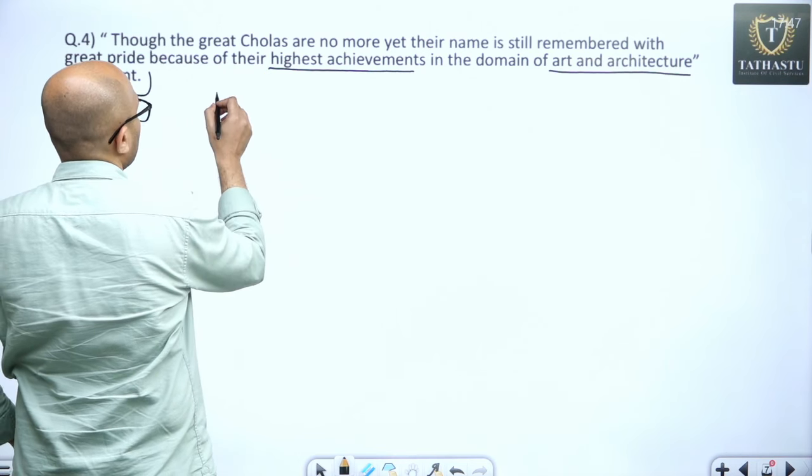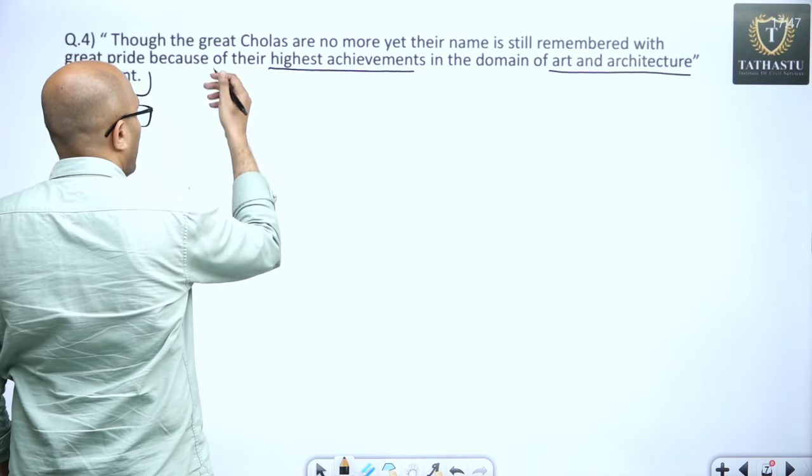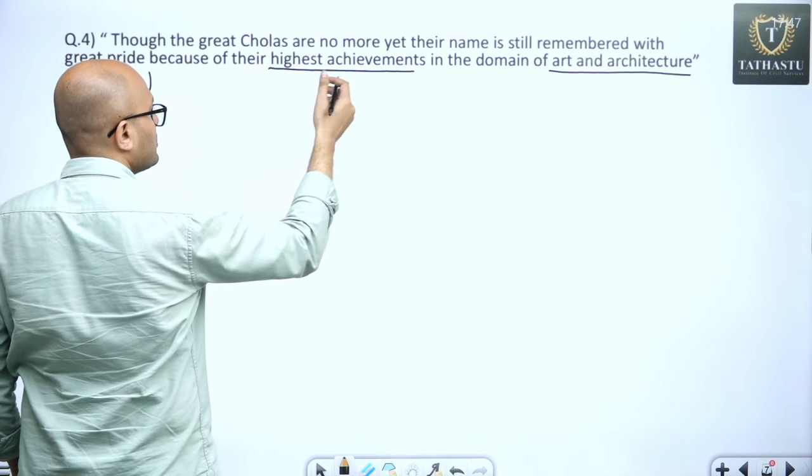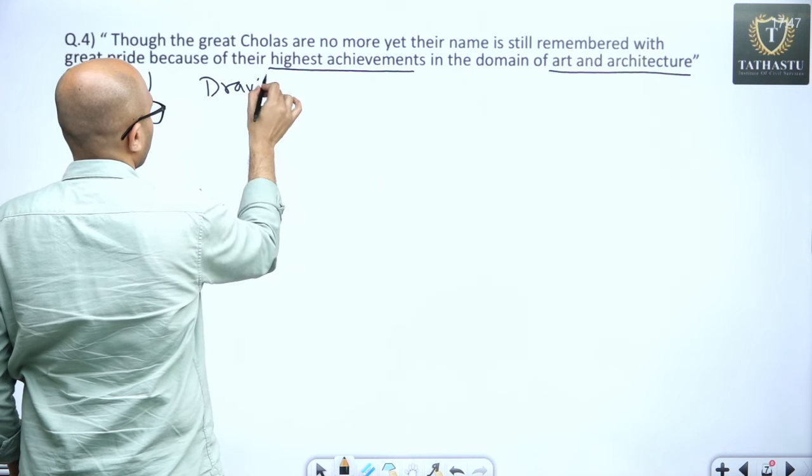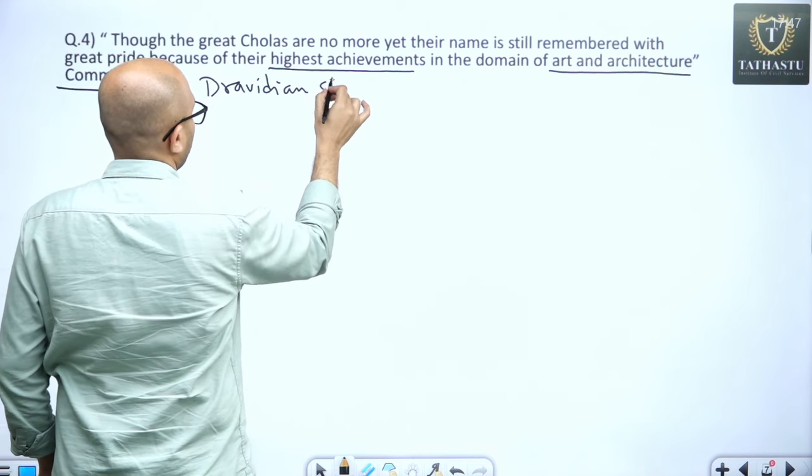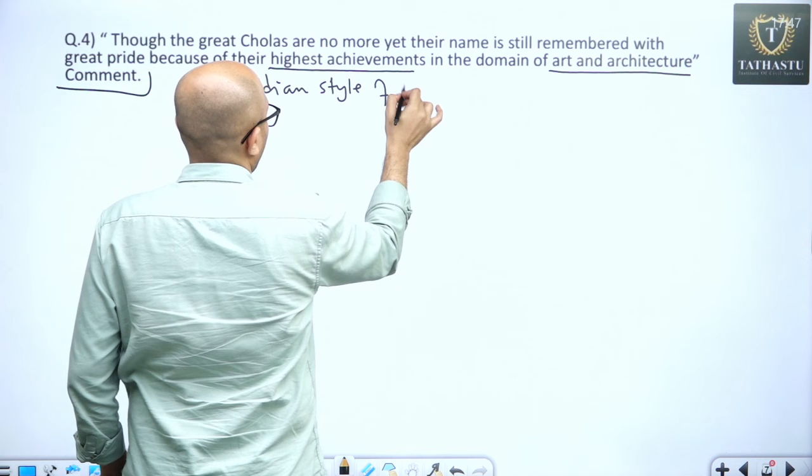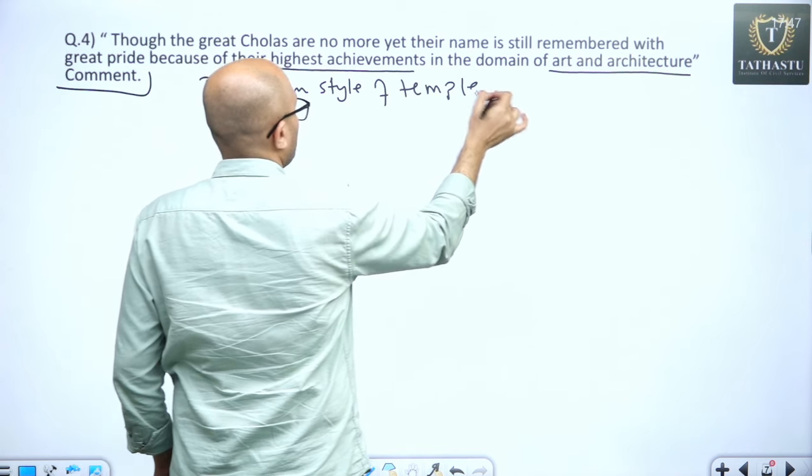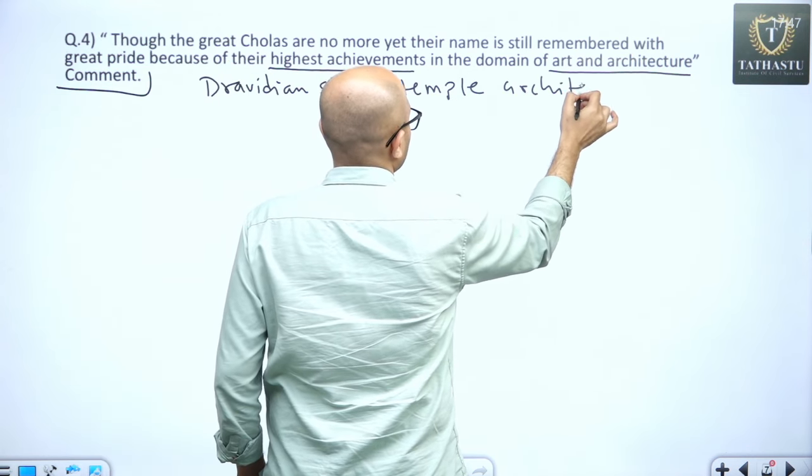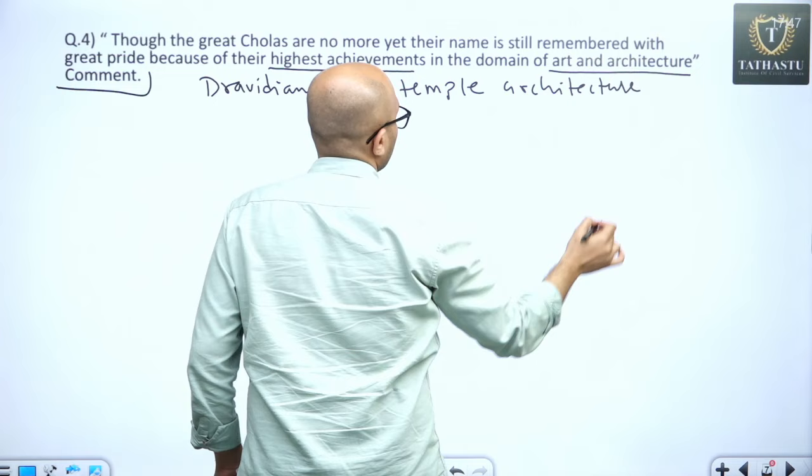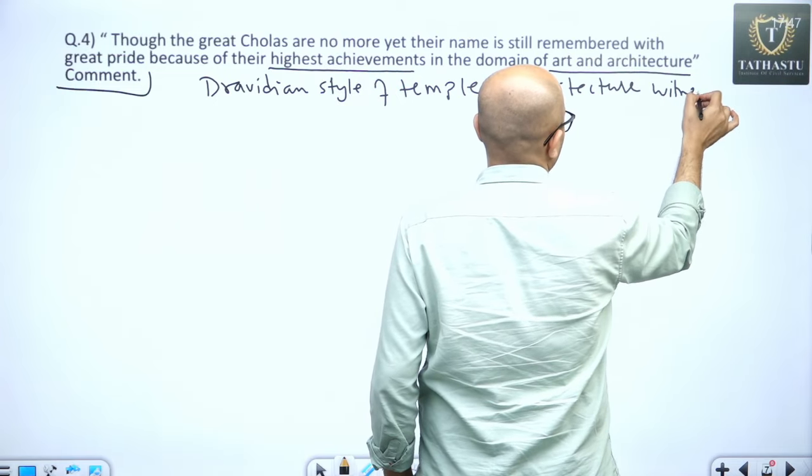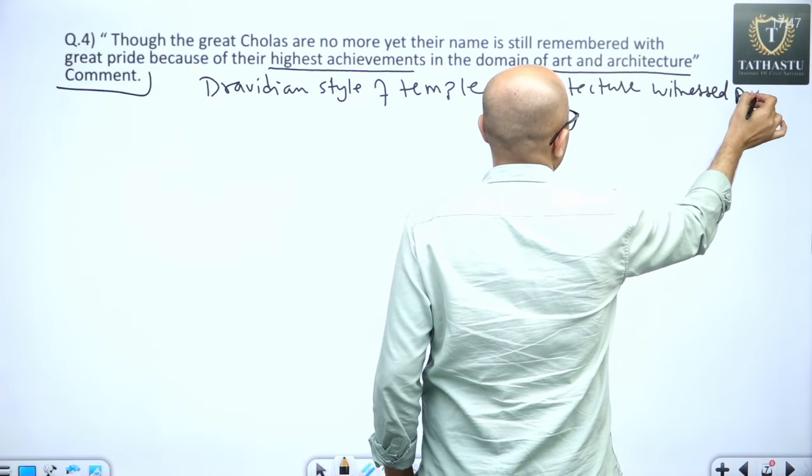First thing we have to see is, in highest achievement was that first Dravidian style of temple architecture witnessed peak how?